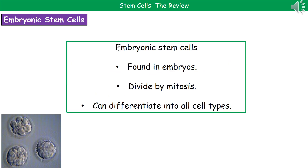The first type we're going to look at are the embryonic stem cells. Hopefully the name tells you they come from embryos. They are able to divide by mitosis and then differentiate into all cell types. I've given you pictures at the bottom there of some of these stem cells in the process of mitosis.